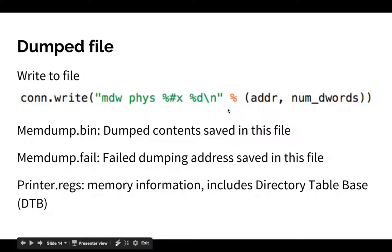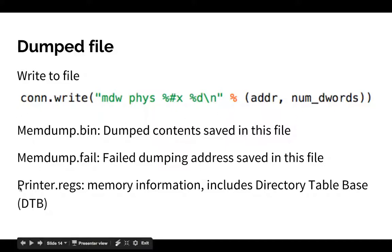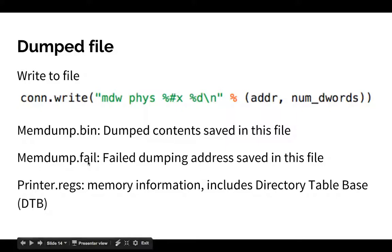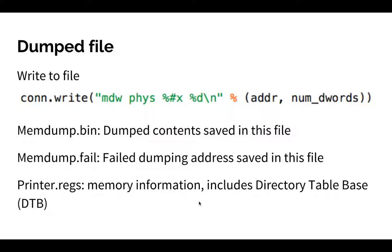After running the script, we get two files: first is memory_dump.bin, which contains the dumped contents; the second is memory_dump.fail, which saves the address of each region that failed to dump. The script also writes a printer_regs file which saves memory information including the Directory Table Base (DTB) address, which we will need when using Volatility.